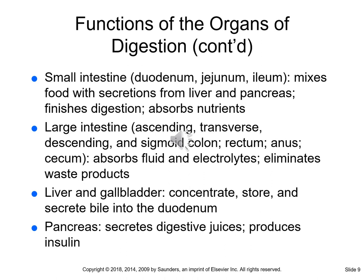The small intestines has three sections: the duodenum, the jejunum, and the ileum. As food passes into the small intestines, the end products of digestion are absorbed through its thin mucous membrane lining into the bloodstream. Carbohydrates, fats, and proteins are broken down in the small intestines. Enzymes from the pancreas, bile from the liver, and hormones from glands of the small intestines all help with the digestive process. These secretions mix with the food as it moves through the intestines by peristalsis.